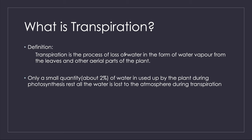So transpiration is the loss of water through the aerial parts of the plant. Transpiration is very important for the plant. Only a small quantity of water — about 2% — is used by the plant for photosynthesis. The rest, approximately 98%, is lost to the atmosphere during transpiration.